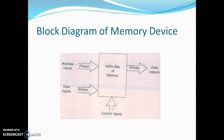The number of inputs required to store data into or read data from a memory location is N. One set of N lines is required for storing the data into the memory location, referred to as data input. Another set of N lines is required for reading the data already stored in the memory, referred to as data output lines. The concept of a bus is a conducting line or conducting wire which transmits the signal from input to output.